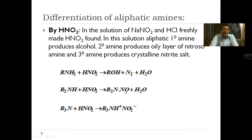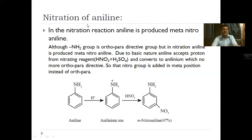So we have three types of reactions with nitrous acid corresponding to three types of amines: primary amine produces alcohol; secondary amine produces nitrosoamine; and tertiary amine produces trialkyl ammonium nitrite.